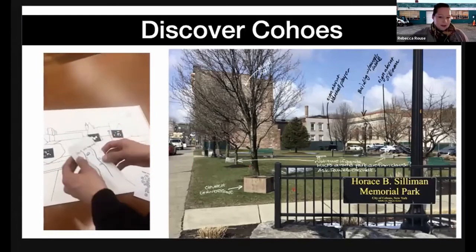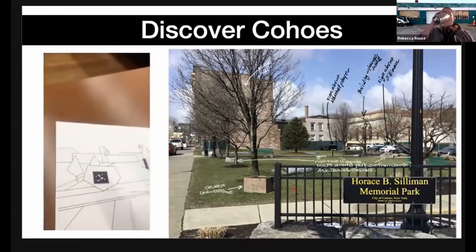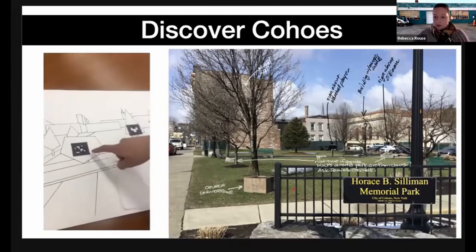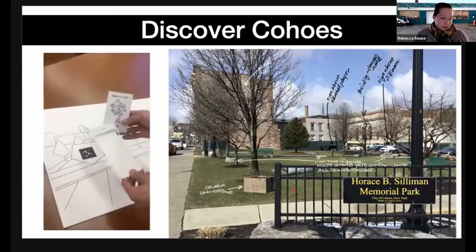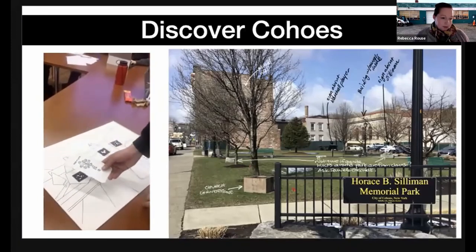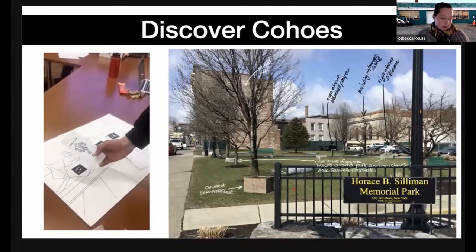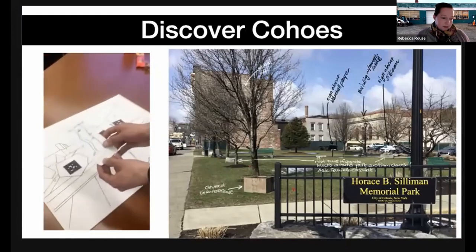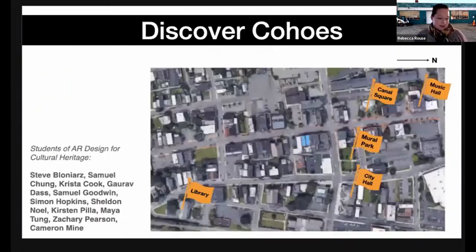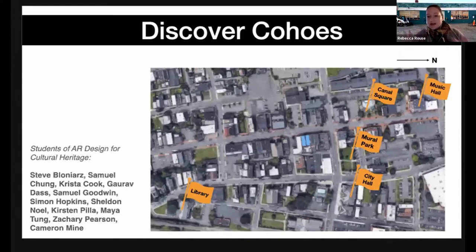Ultimately the students designed what they called 'Discover Cohoes' — an augmented reality scavenger hunt game designed for mobile phones that interacted with the planned mural in the pocket park and several other points of interest downtown. The project was designed to complement the social studies curriculum, so the game could be used as a no-cost field trip for middle school teachers since everything is within walking distance. The students designed four learning modules to functioning prototype level — four stops in the scavenger hunt — and designed several further ones in the documentation provided to the city.